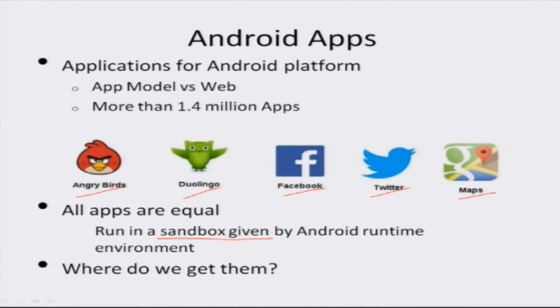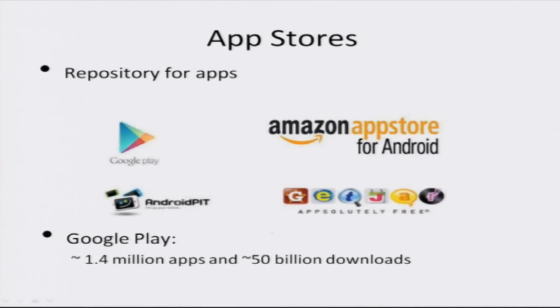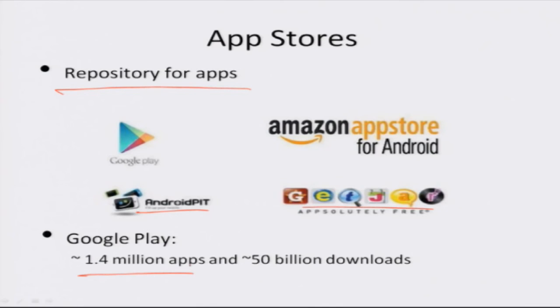Where do we get all these applications? There are online repositories such as Google Play, Amazon App Store for Android, and third-party repositories like Android Pit and GetJar. These repositories vary in their review processes, and some support multiple operating systems beyond Android, such as Apple iOS and Windows Mobile. The largest repository is Google Play, with 1.4 million apps and more than 50 billion downloads to date.